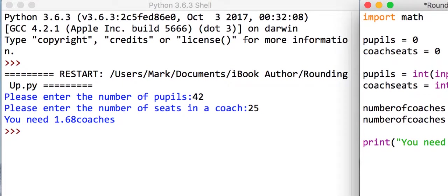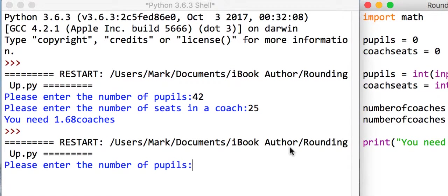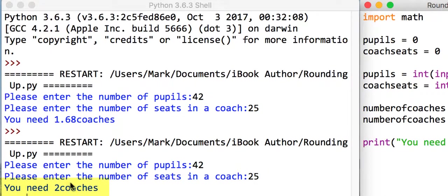If we save that and run it with the same data again, 42 pupils and the same bus size of 25 on a coach, you'll see that we need 2 coaches.